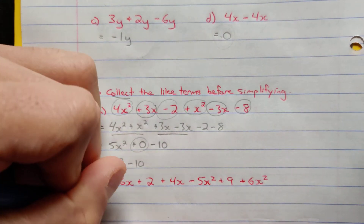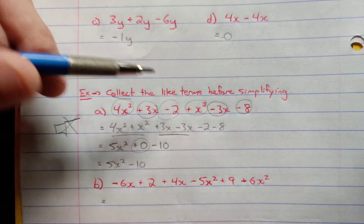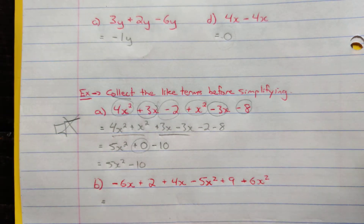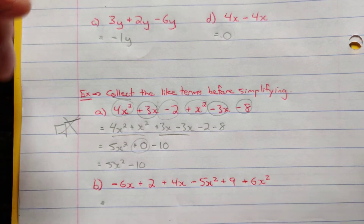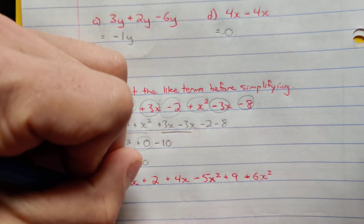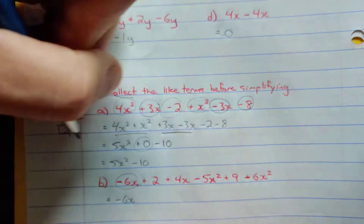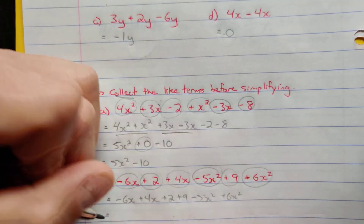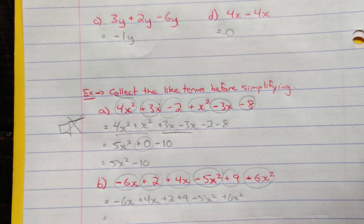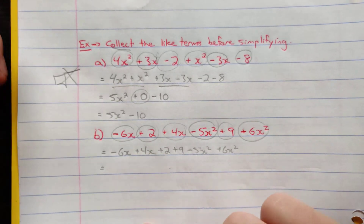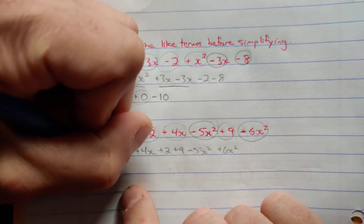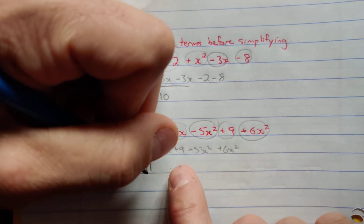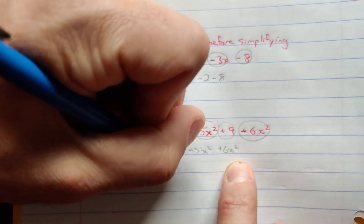For the next example, we collect like terms in the order they appear. We have negative 6x plus 4x; plus 2 plus 9; and negative 5x squared plus 6x squared. Simplifying: negative 6 plus 4 gives negative 2x; 2 plus 9 gives 11; and negative 5x squared plus 6x squared gives 1x squared, or just x squared.